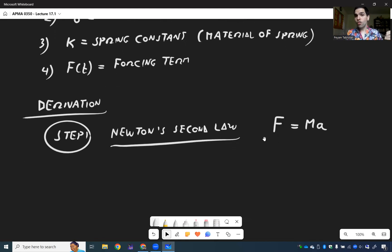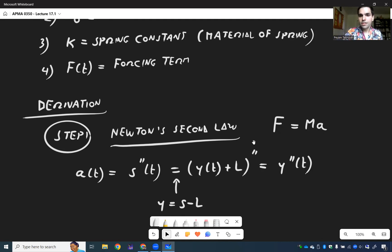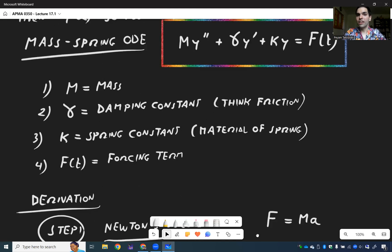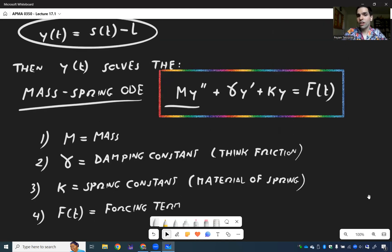Force is the total force, which we'll talk about. Mass is given. And the acceleration, well, a of t is s double prime of t. But remember what was y? Y was s minus l. So s is y plus l. So you get y plus l double prime. And lastly, since l is a constant, that's the same thing as y double prime.